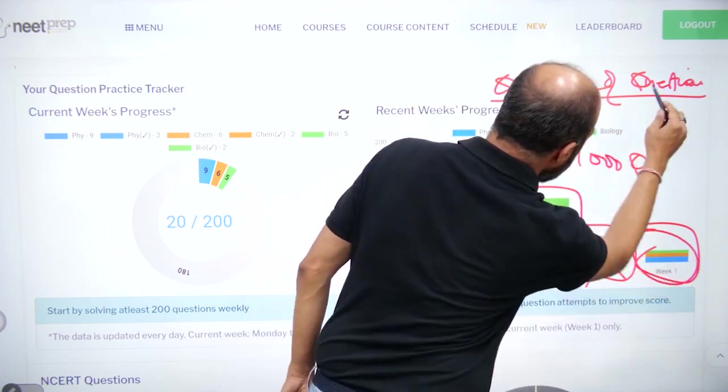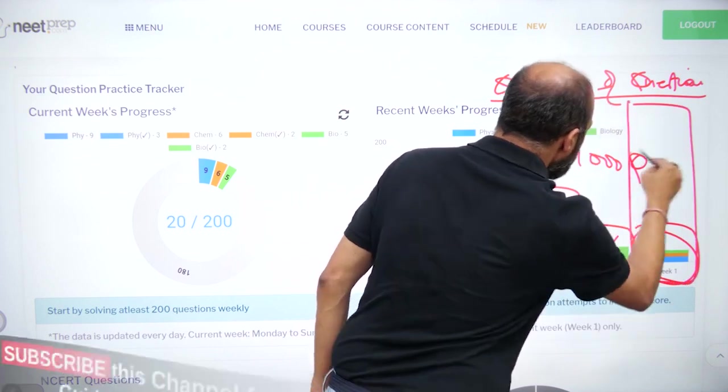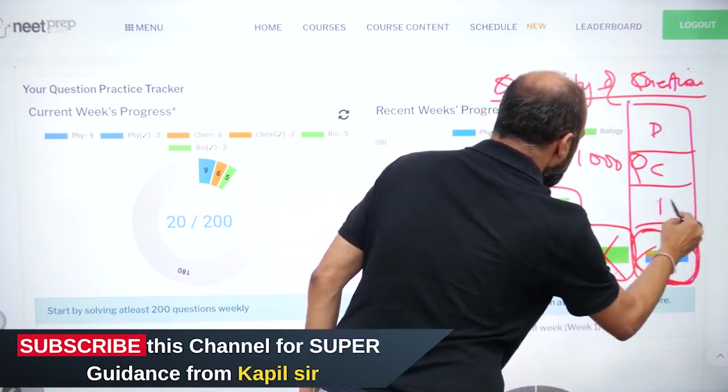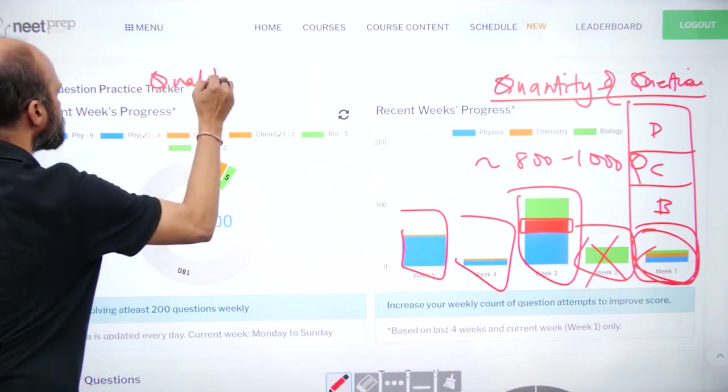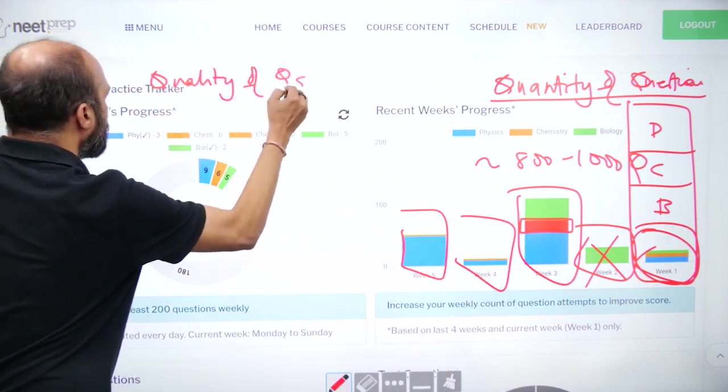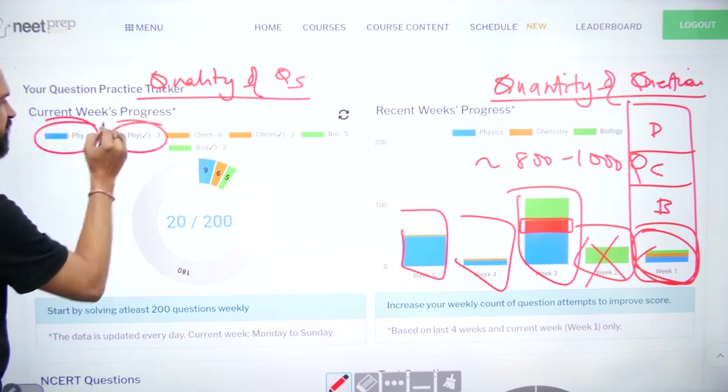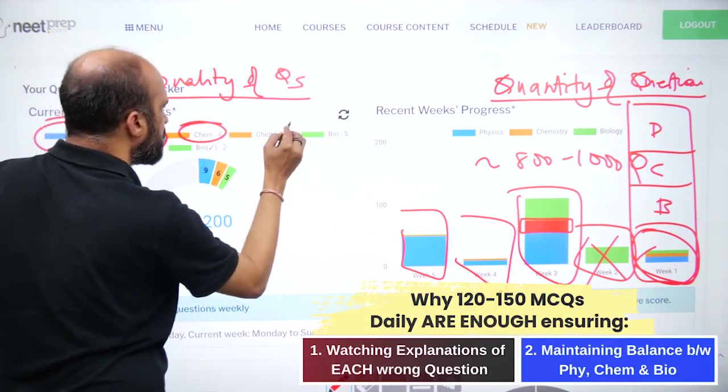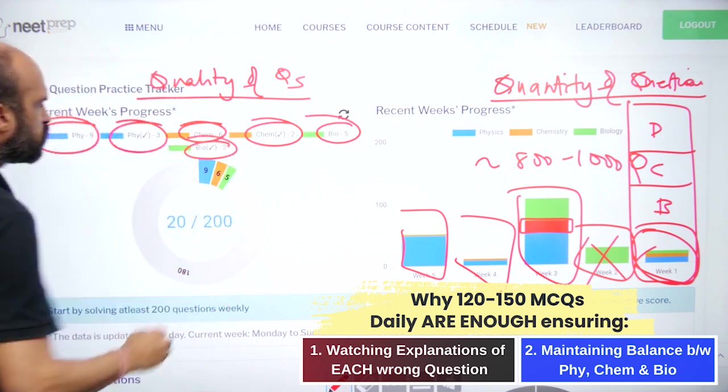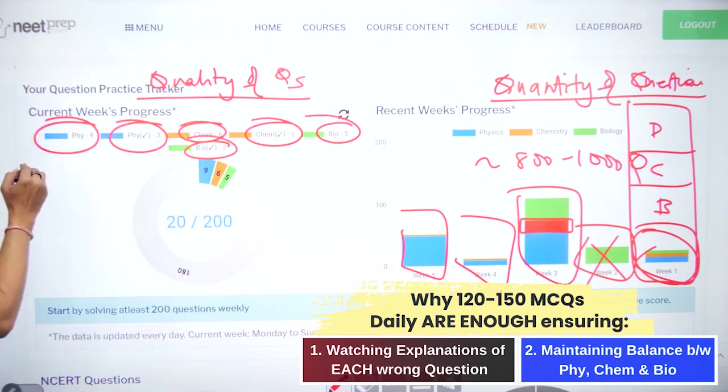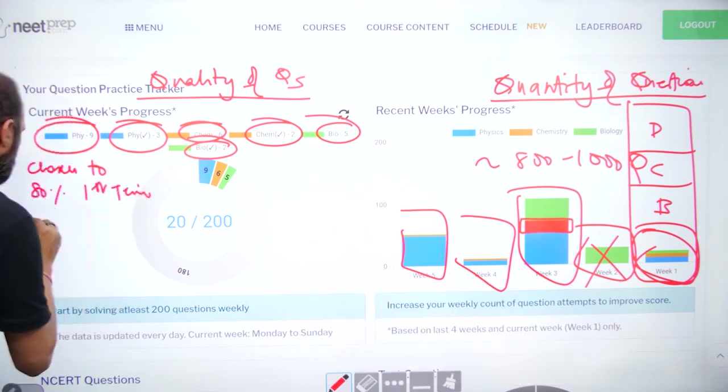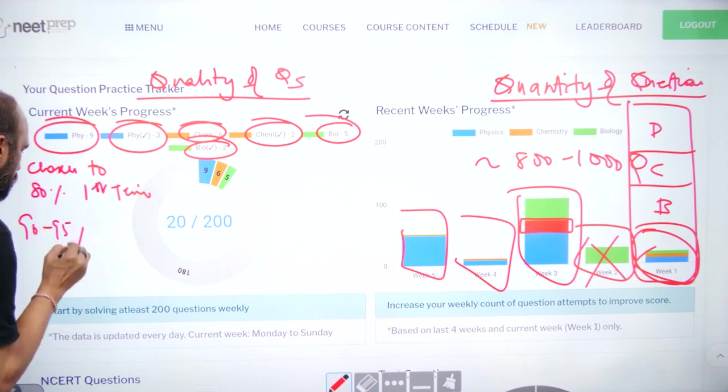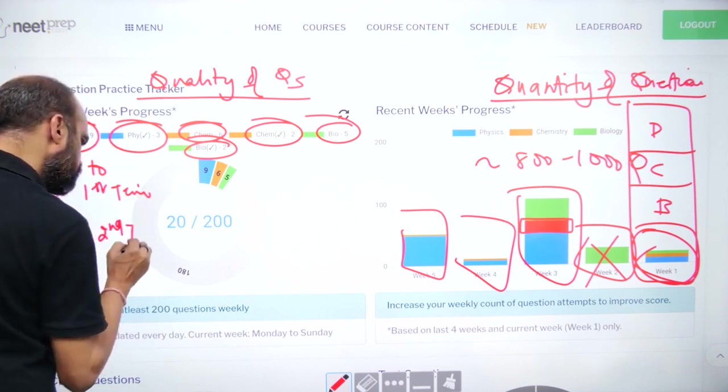if I can extrapolate it like this, physics, chemistry, bio. Right? Here it shows quality of questions. Quality of questions means, you practice questions, physics, nine questions you practice, you got three right. Six chemistry questions you practice, you got two right. Five bio questions you practice, you got two right. This number should be closer to 80% when you try for the first time. It should be closer to 90 to 95% when you are revising the chapter.